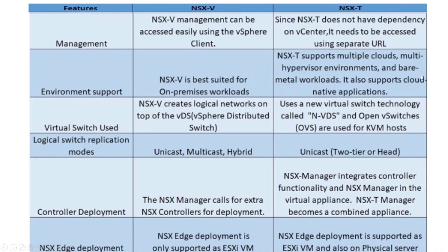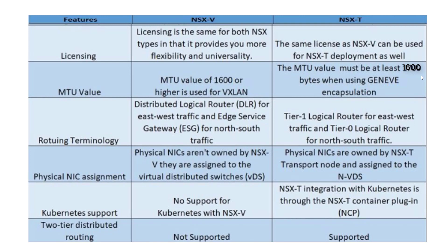Licensing is similar for both NSX types, providing flexibility and universality — the same license can be used for NSX-V and NSX-T. The MTU value remains the same; you need at least 1600 MTU or higher for both VXLAN and Geneve encapsulation, so there is not much difference there.